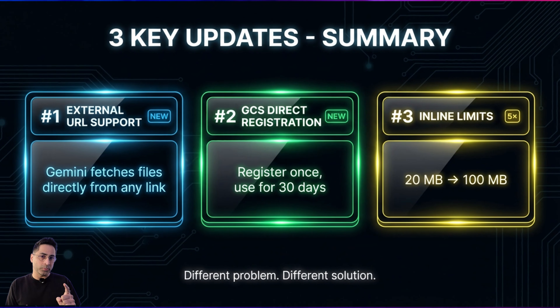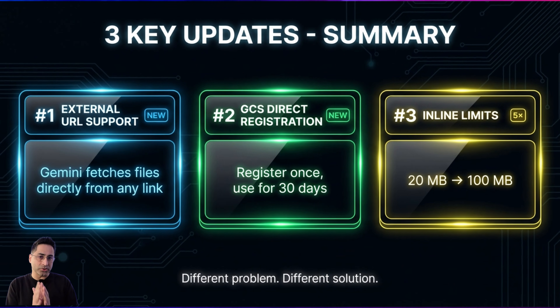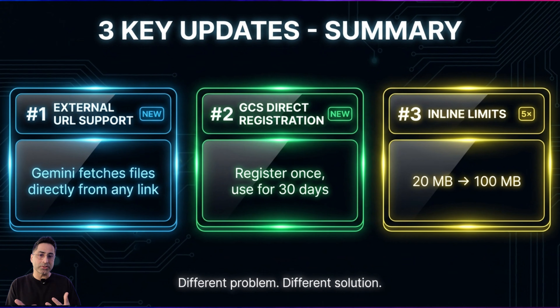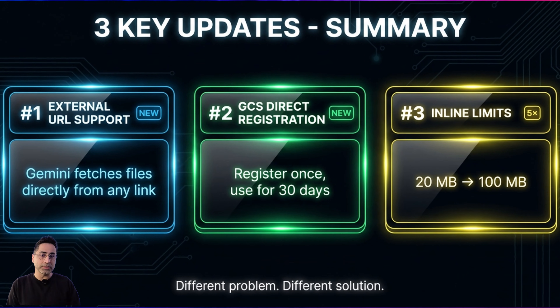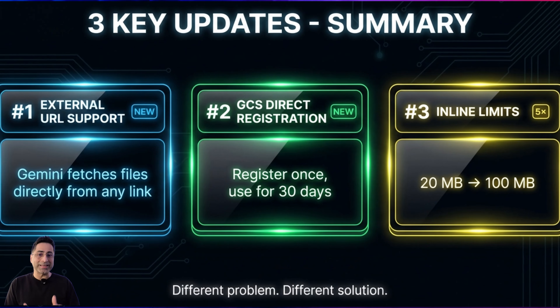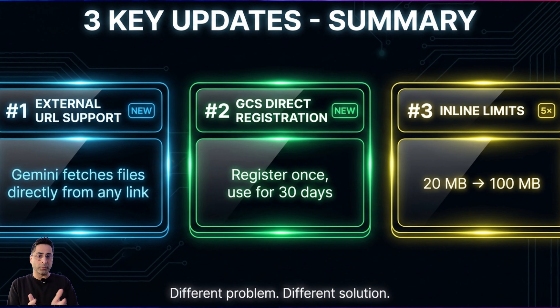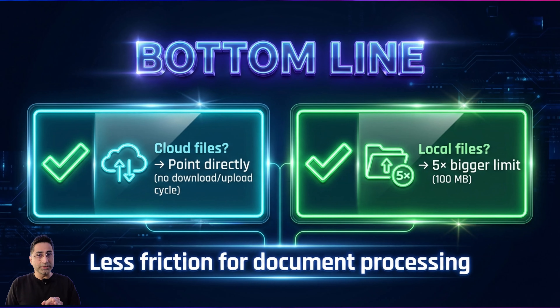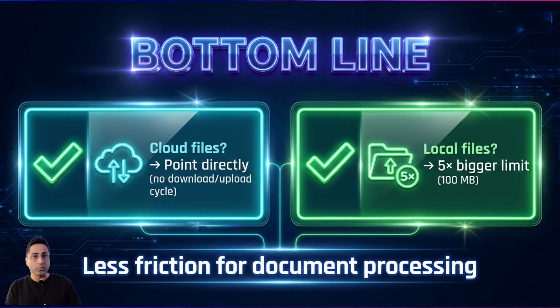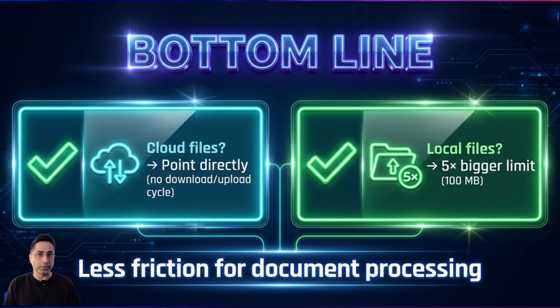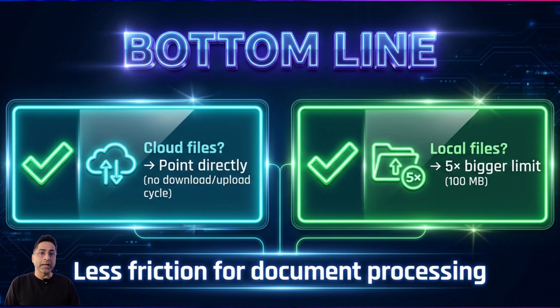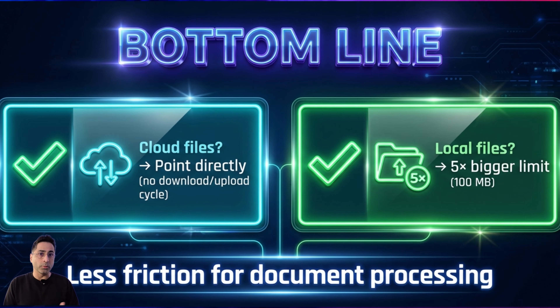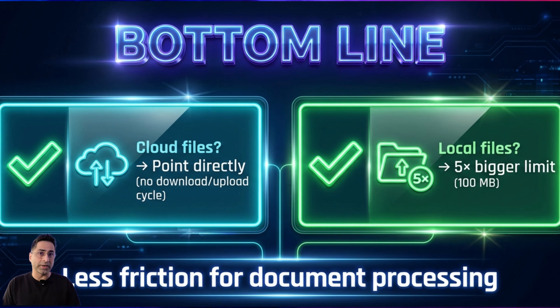Just to summarize the three important updates: number one is external URL support — Gemini fetches files directly from any link. Number two is GCS direct registration — register once and use it for 30 days. And number three is inline limits, which went from 20 MB to 100 MB. The bottom line is if your document is already stored in a cloud bucket, you don't have to download, upload, and manage that whole cycle. And if you're uploading files from your local folder, the file size limit is increased quite a bit.